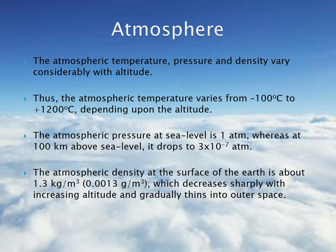The atmospheric temperature, pressure and density vary considerably with altitude. Thus, the atmospheric temperature varies from minus 100 degrees celsius to 1200 degrees celsius depending upon the altitude. The atmospheric pressure at sea level is 1 atm, whereas at 100 kilometers above sea level it drops to 3 into 10 raised to power minus 7 atm. The atmospheric density at the surface of the earth is about 1.3 kg per meter cube, which decreases sharply with increasing altitude and gradually turns into outer space.